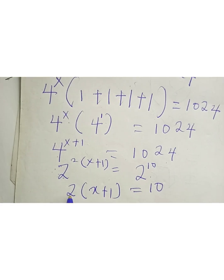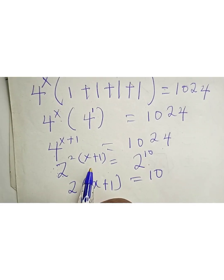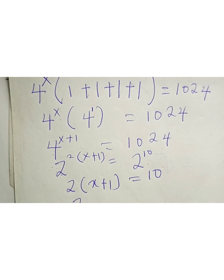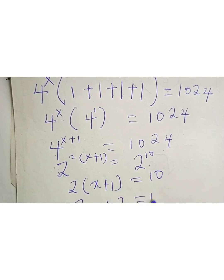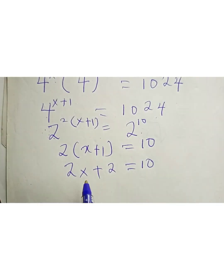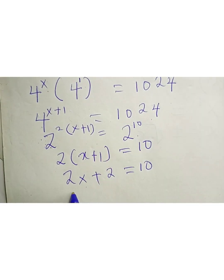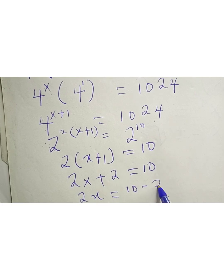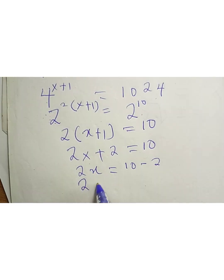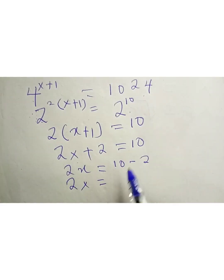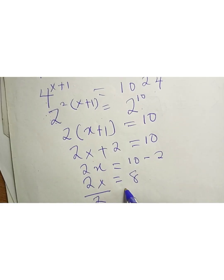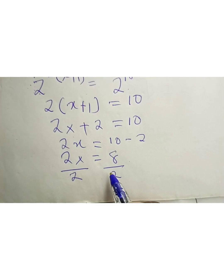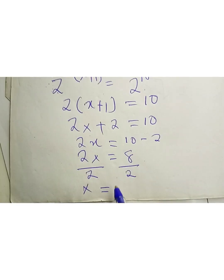We open the bracket: 2x + 2 = 10. Collecting like terms: 2x = 10 - 2, so 2x = 8. Dividing both sides by 2, we get x = 4.